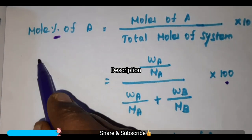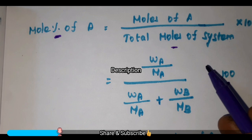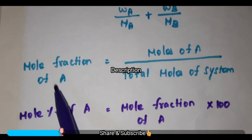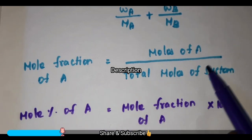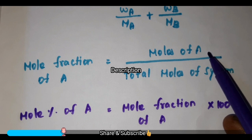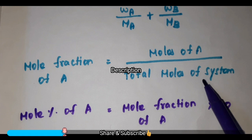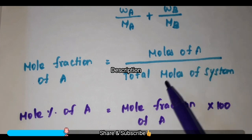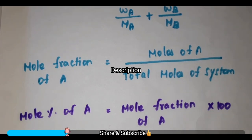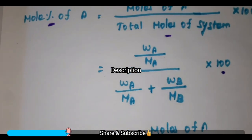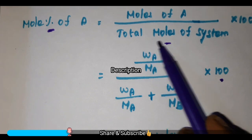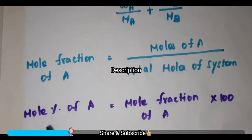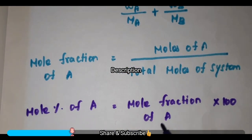You have to multiply by 100 — only then it is termed as mole percentage; otherwise this term is known as mole fraction. Mole fraction of A is nothing but the ratio of the number of moles of the particular component present in the system to the total moles of the system. So, mole fraction of A is equal to moles of component A divided by total moles of system. You can relate mole percentage with mole fraction: mole percentage of A is equal to mole fraction of A into 100.